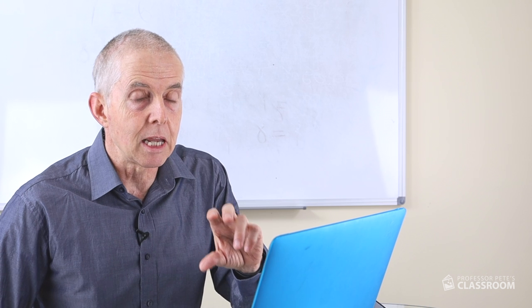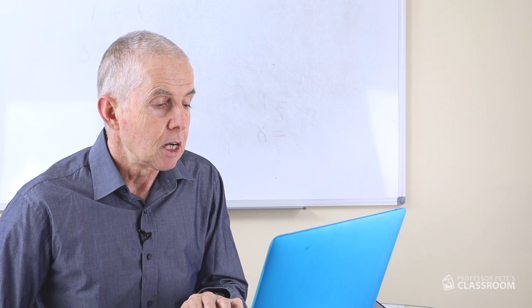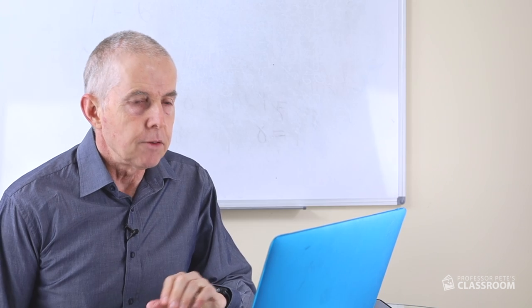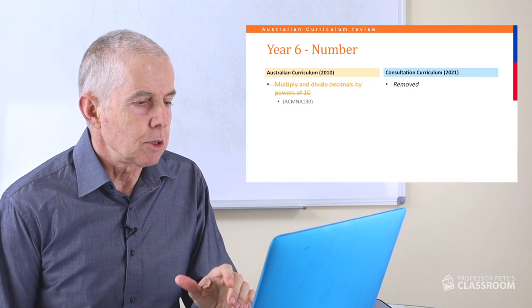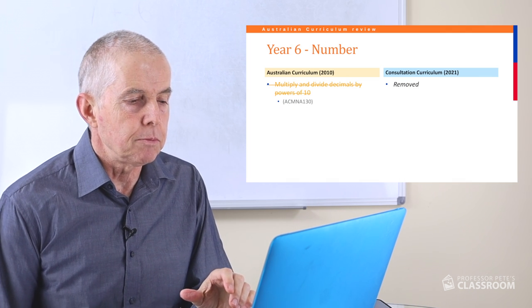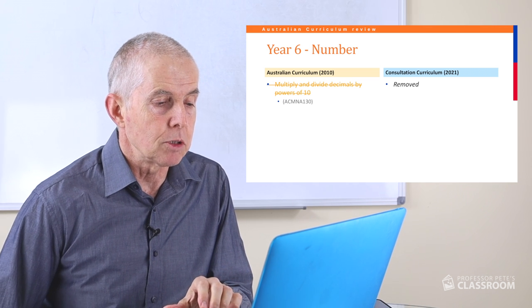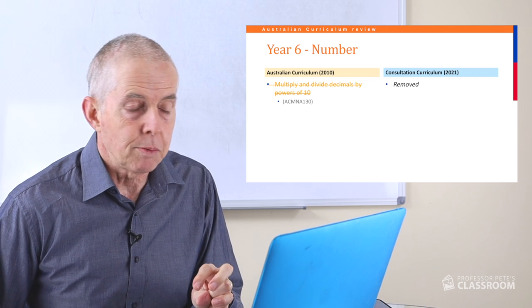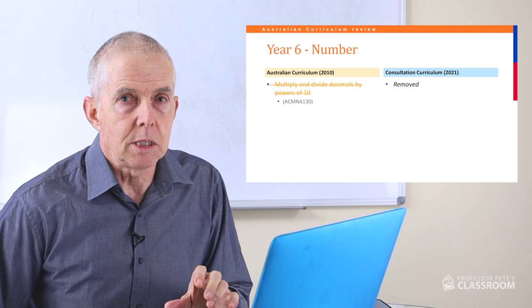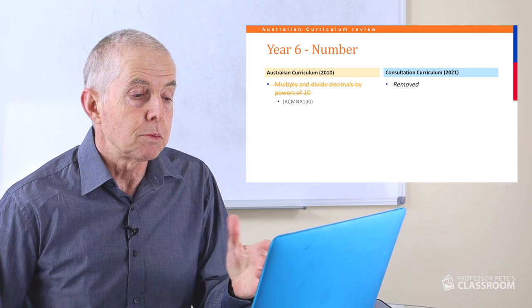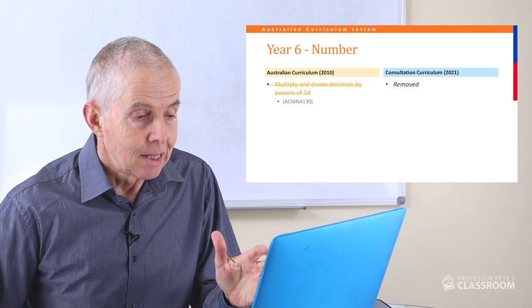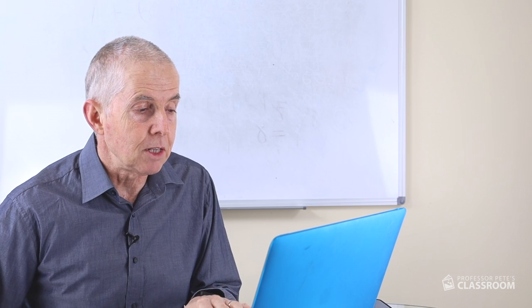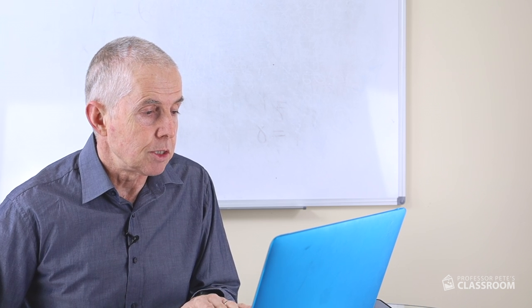This reminds me that the language is similar to that used in the year five curriculum, so I suspect some of the same team members have been working on both. The final number content descriptor slide shows one from the existing curriculum that has been removed — multiply and divide decimals by powers of 10. I thought that was a nice topic to explore properties of decimal fractions. I personally would prefer to see it left in, but curriculum writers have decided to remove it.